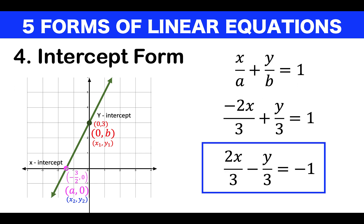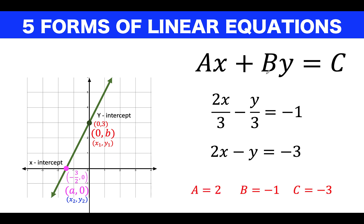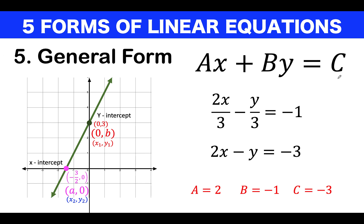Not all the time do we know the values of the x and y-intercepts. So in general, if the two given points are any two arbitrary points, we need the general form of a linear equation. We derive it by multiplying each term of the intercept form equation by the denominator 3, arriving at 2x − y = −3. This is now in the form Ax + By = C, called the general form of a linear equation, where capital A, B, and C distinguish from the intercept values a and b.